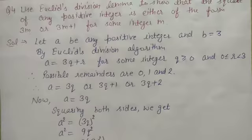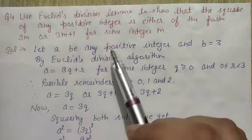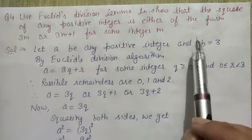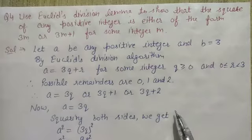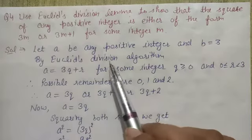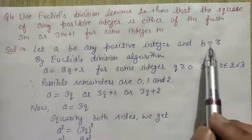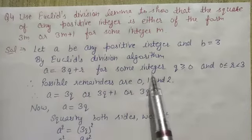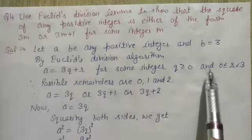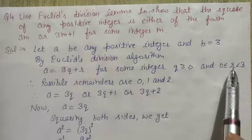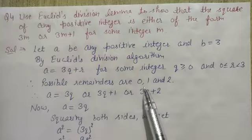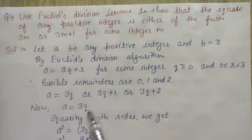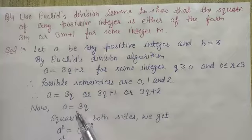Next, question 4: use Euclid's division lemma to show that the square of any positive integer is either of the form 3m or 3m+1 for some integer m. So let a be any positive integer and b equals to 3. By Euclid's division algorithm, a equals to 3q plus r for some integer q greater than or equal to 0, and 0 less than or equal to r less than 3. So possible remainders are 0, 1, and 2, giving a equals to 3q or 3q+1 or 3q+2.